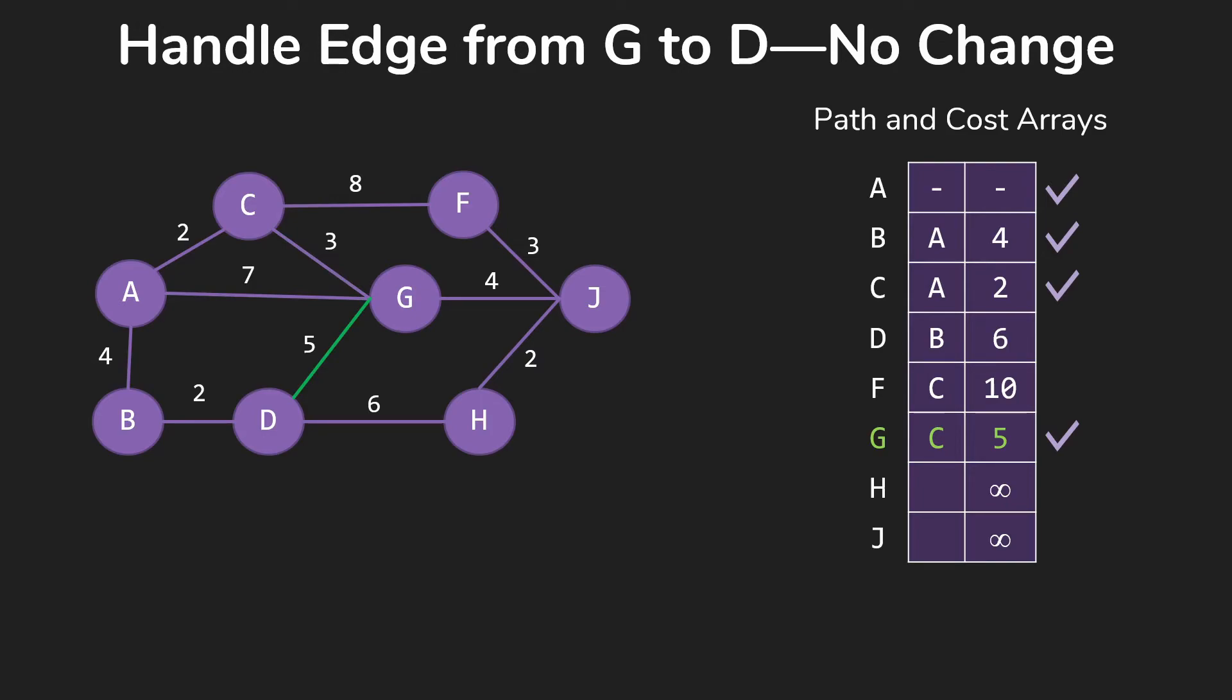When we get to G to D, we see that the current cost to D that we have recorded in the table is 6. We could get to D for 10, that is not smaller than our current cost, so we don't change anything in the array.